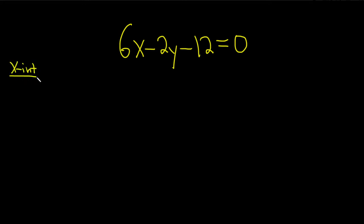So to find the x-intercept, you set the other variable equal to zero. So we're going to set y equal to zero in this equation. So then we have 6x minus 2 times zero minus 12 and that's equal to zero. So you just set y equal to zero in the equation and that will give you the x-intercept.